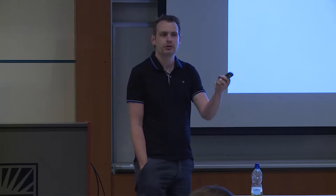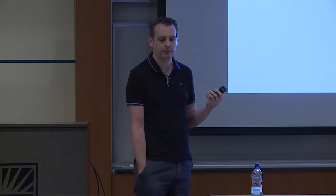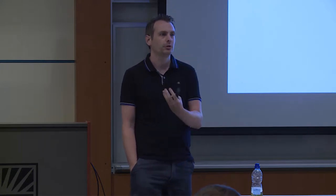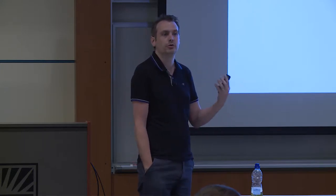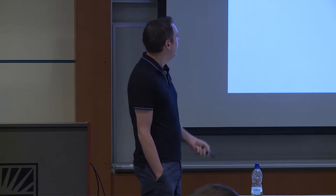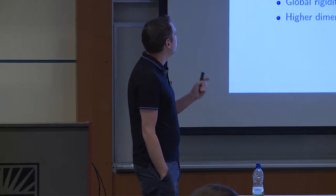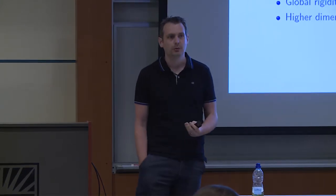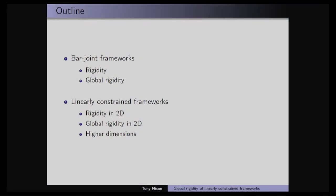My perspective on rigidity is a little bit different to what we just heard from Ileana. I'm very much a combinatorial person — I like graphs, I like matroids — so I always assume my frameworks are generic, and then I'm interested in trying to understand, as purely a property of the graph, when the framework is rigid or globally rigid. I'll tell you a little bit about rigidity and global rigidity. Most, if not all, you've already heard, so I'll go relatively fast, but please stop me and ask questions if I go too fast.